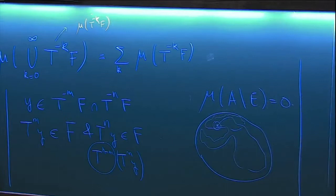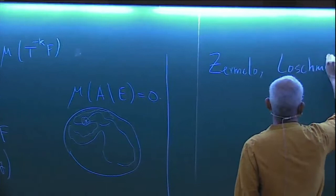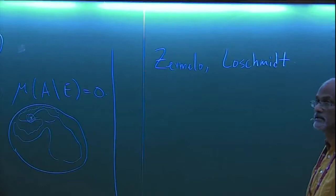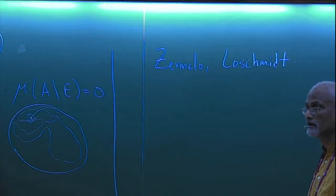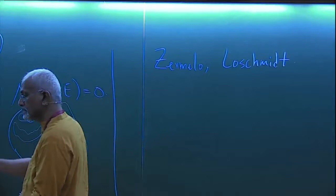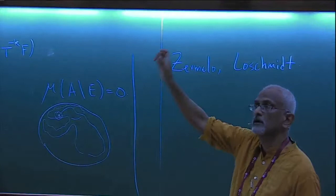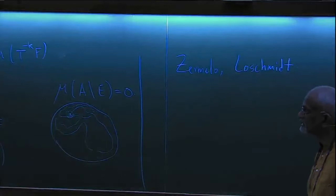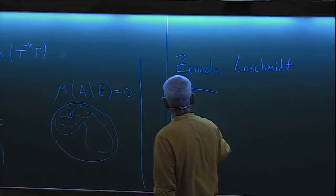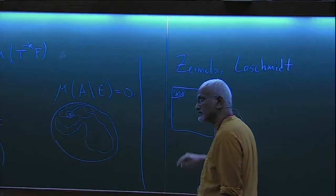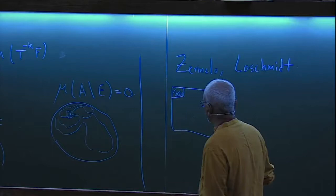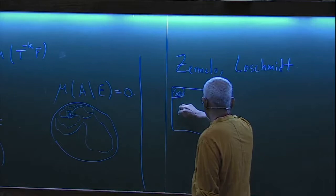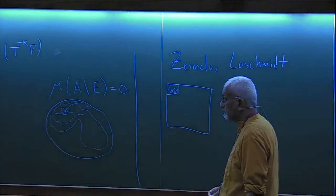This was used by Zermelo and Loschmidt to give a hard time to Ludwig Boltzmann concerning the H-theorem and the monotonic increase of entropy. The argument was that the state of a gas is also a point in a high-dimensional phase space, it's an isolated system evolving under Hamiltonian dynamics, measure-preserving — and therefore it has to come back.